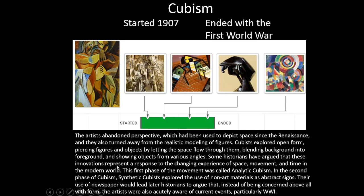The first phase of the movement was called Analytic Cubism. In the second phase, Synthetic Cubists explored the use of non-art materials as abstract signs. Their use of newspaper would lead later historians to argue that, instead of being concerned above all with form, the artists were acutely aware of current events, particularly World War I.